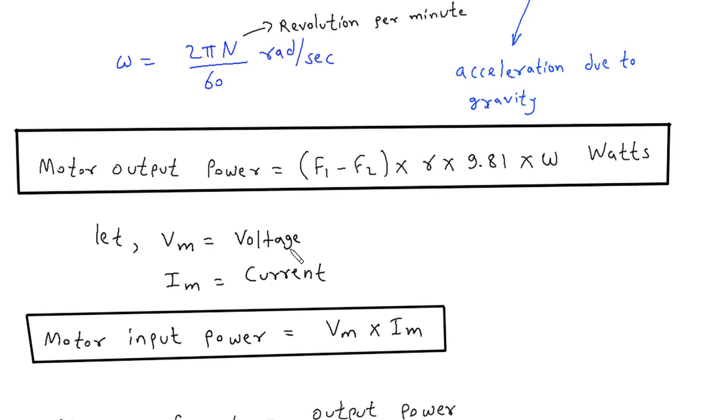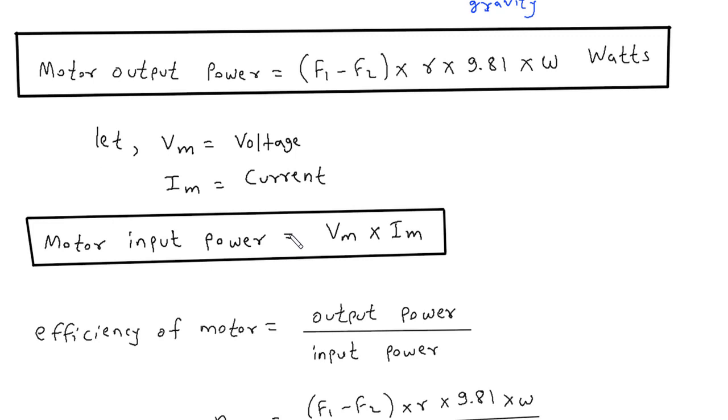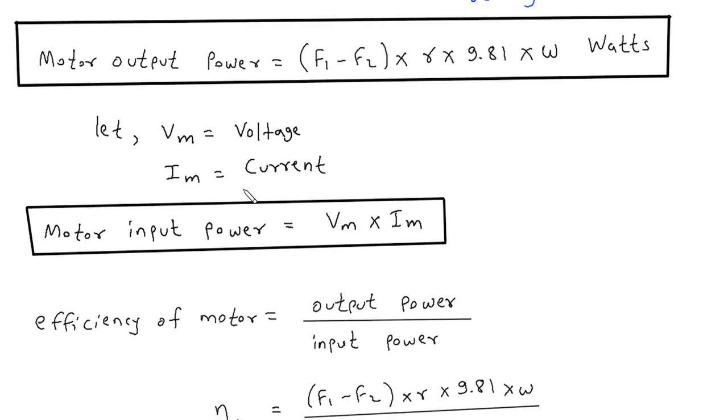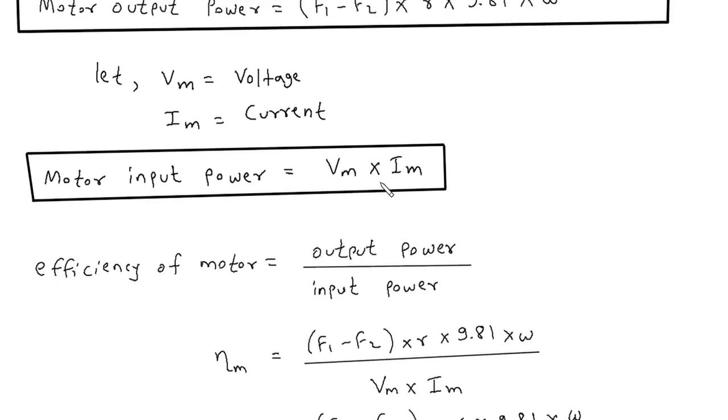Let Vm equal voltage and Im is the current. This is for finding input power of motor. We will measure this voltage by voltmeter and this current by ammeter. So motor input power is equal to, we know the formula for power is V×I, means voltage into current. So here is Vm into Im, where Vm is motor voltage and Im is motor current.